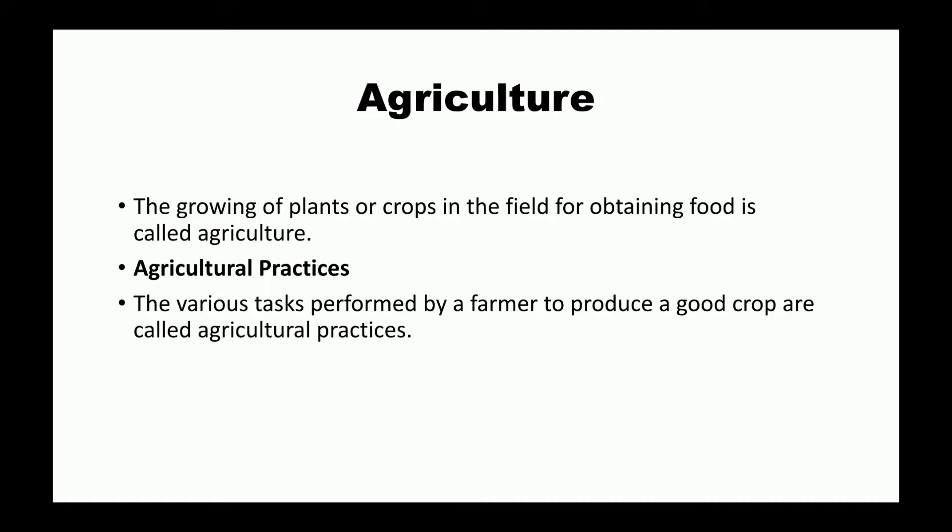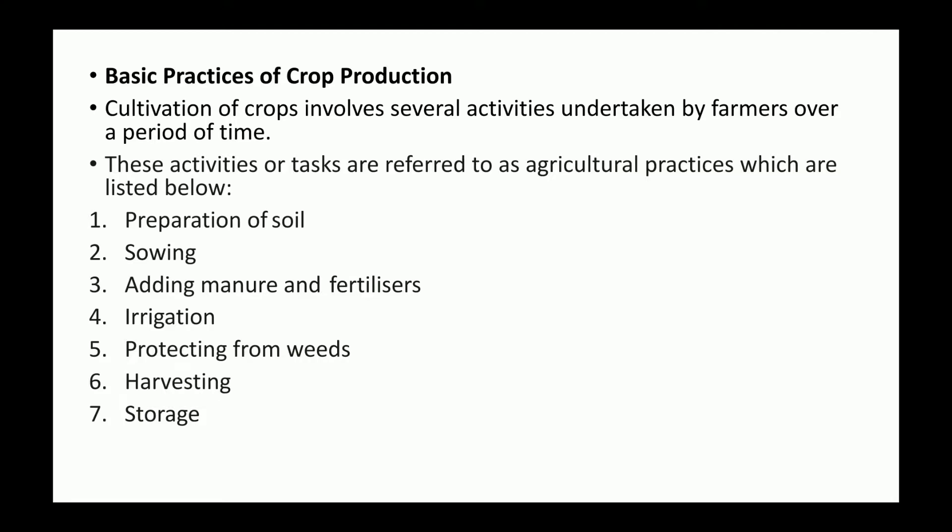Agricultural practices are the various tasks performed by a farmer to produce a good crop. Different tasks are performed for crop production, and we identify which tasks are most important for good crop production. These are called agricultural practices.